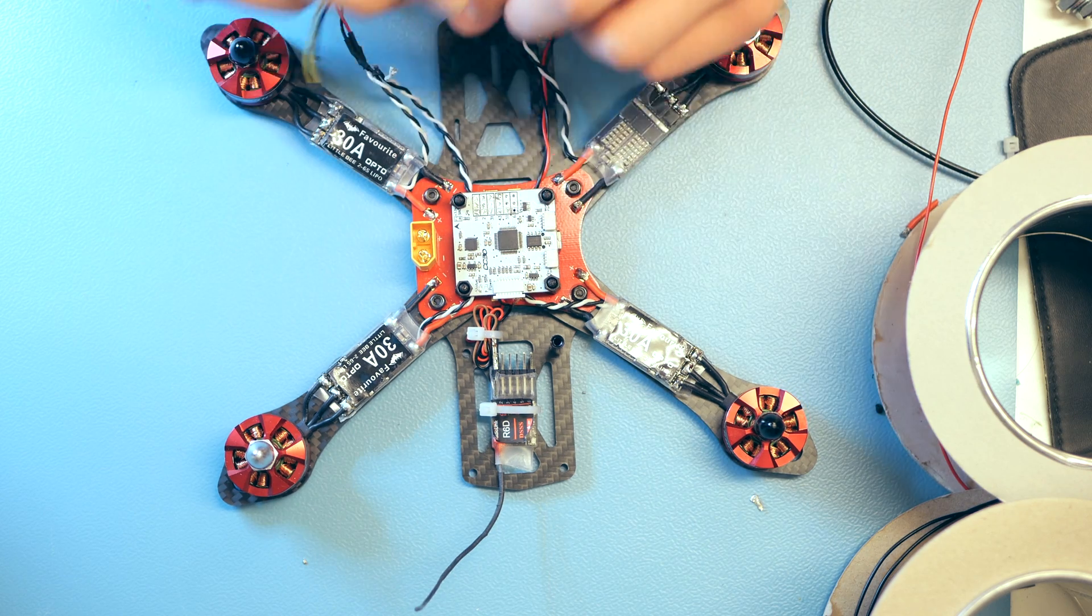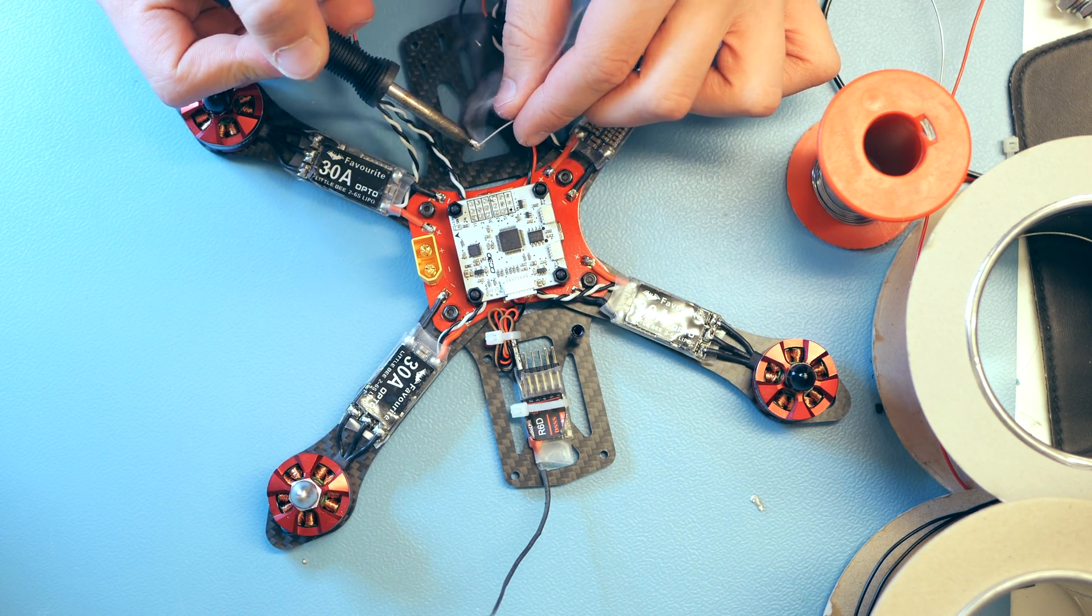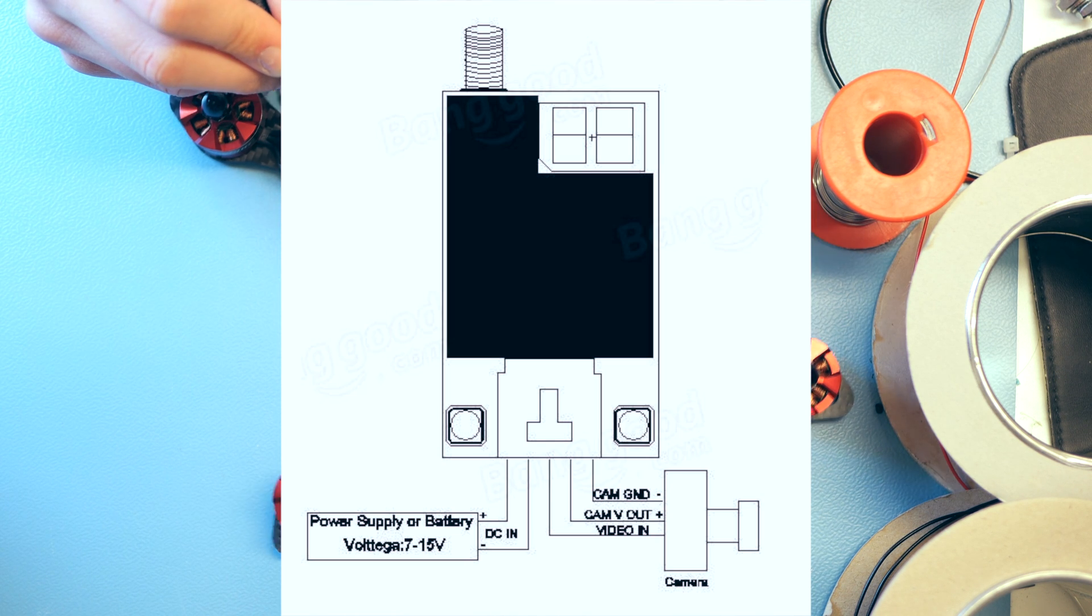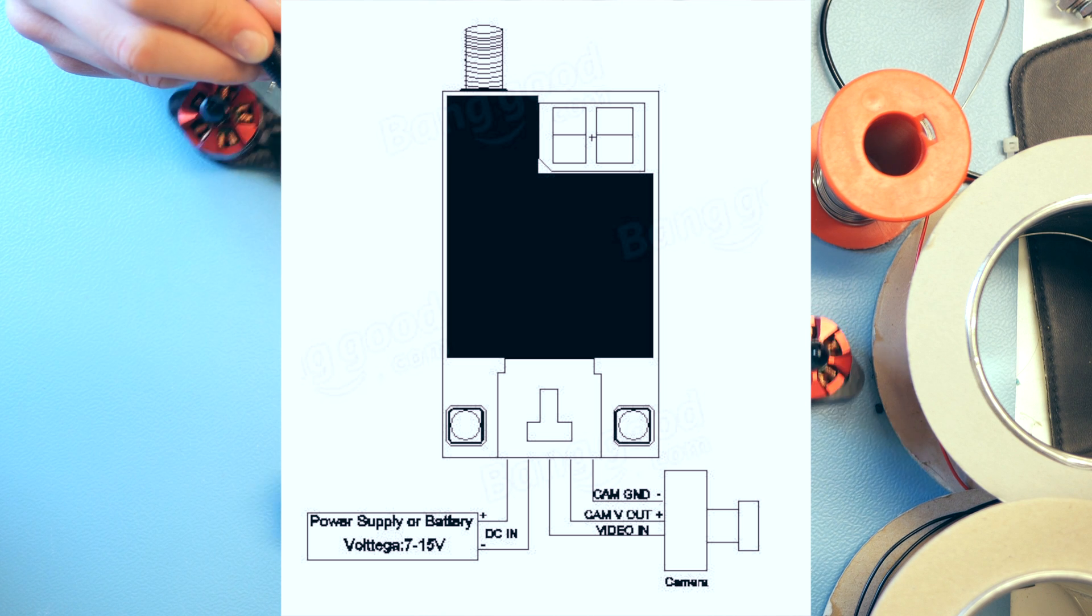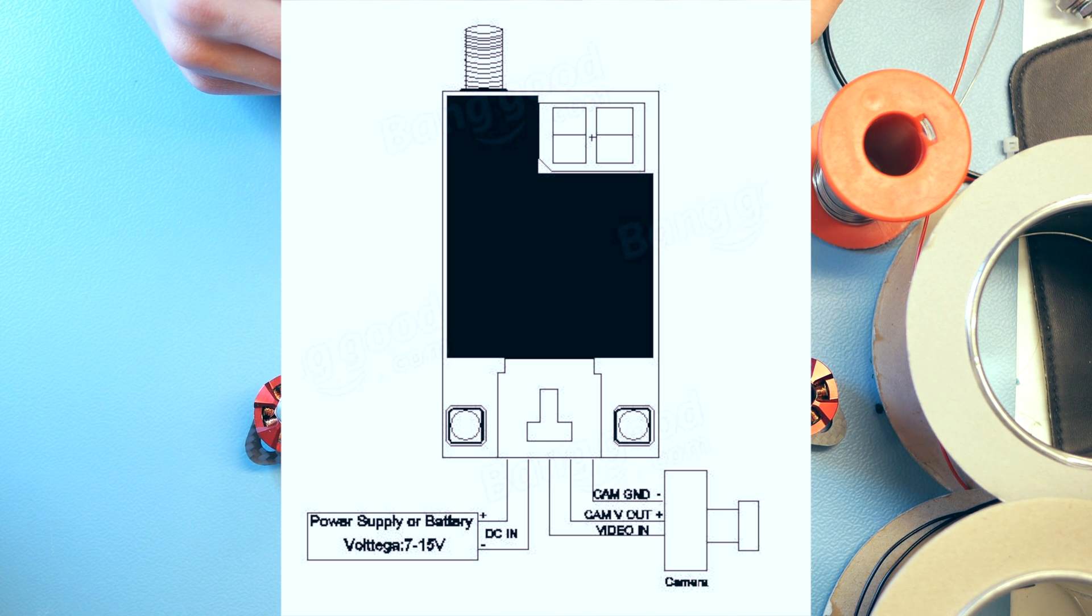Right now I'm just test fitting the cord that comes with the FPV transmitter. It has a red voltage in which I'll just connect to the PDP, and of course a ground that will go to the PDP as well. That way my FPV transmitter gets power.